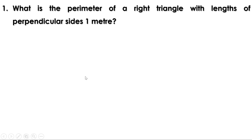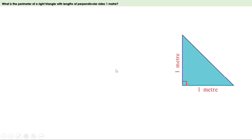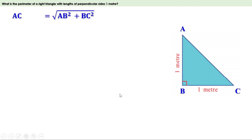What is the perimeter of a right triangle with the length of perpendicular sides 1 meter? Let us take a right-angle triangle ABC with perpendicular sides of 1 meter each. The perimeter is the sum of all three sides. We know only two sides, so first we have to find the third side — that is, we have to find AC, which is the hypotenuse. Hypotenuse² = AB² + BC².